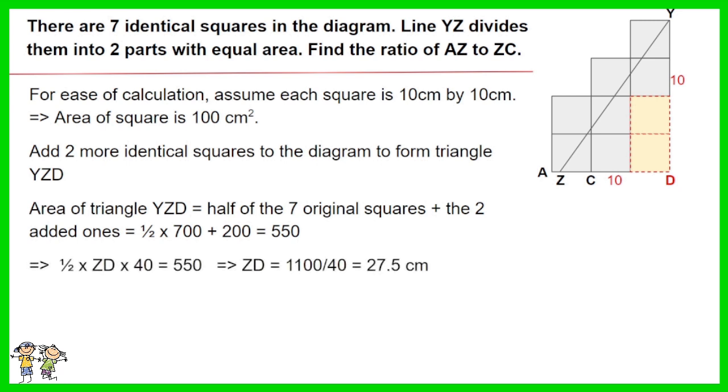Half of ZD times 40 equals 550. Thus ZD equals 27.5 cm. As such, ZC equals ZD minus 20 equals 7.5 cm.